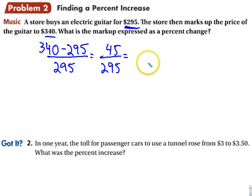I'm waiting. Don't just sit there. Figure this out. All right. Good. So what we get is about 0.15 or 15%.